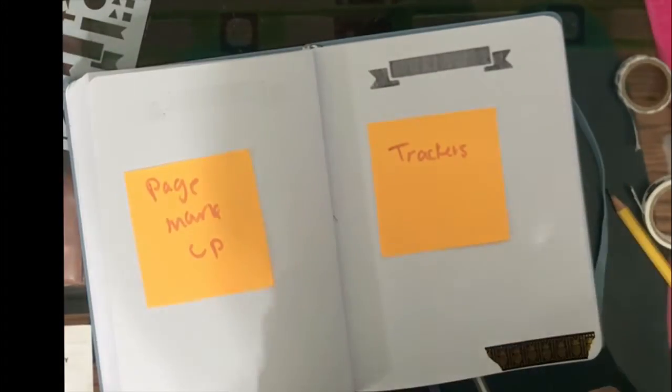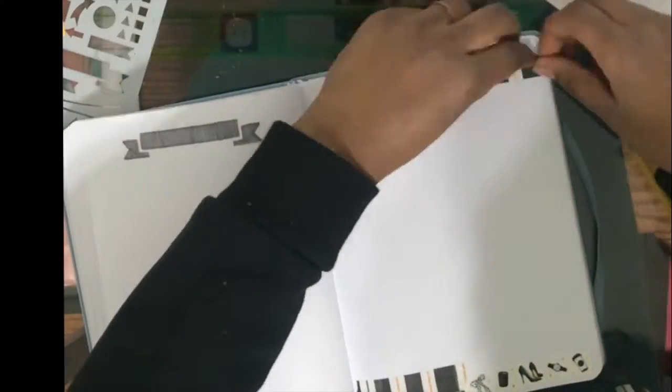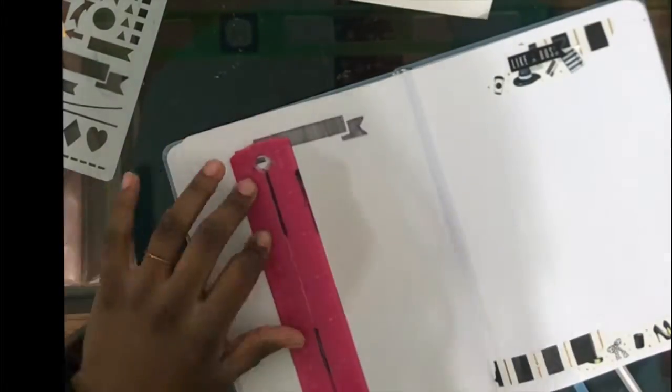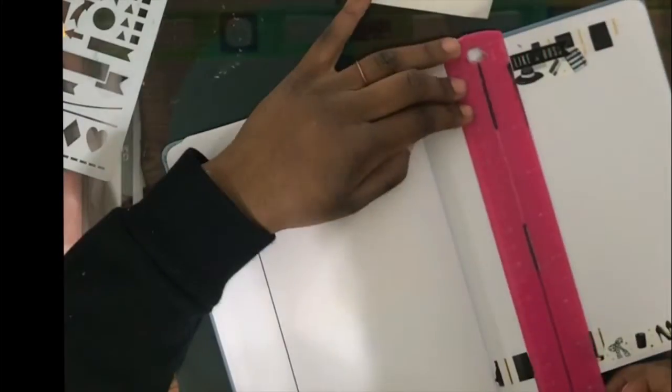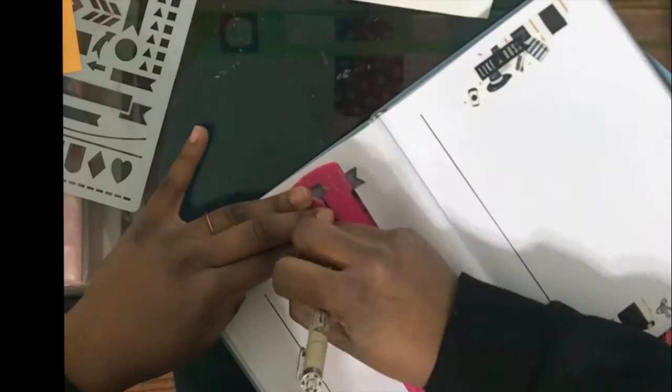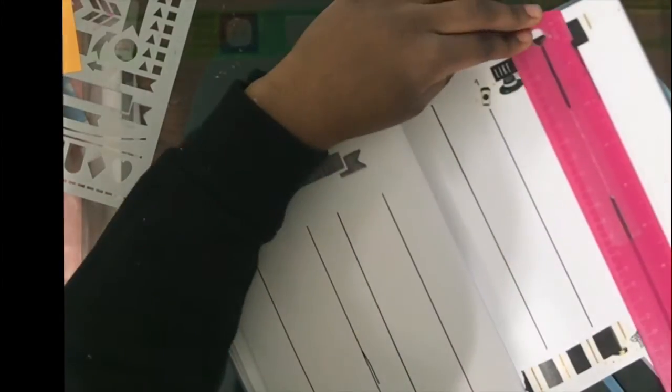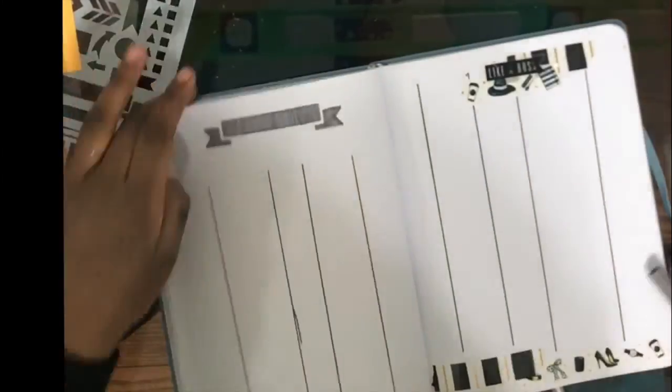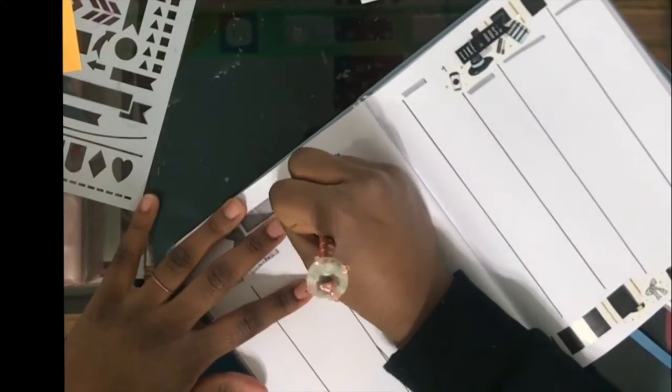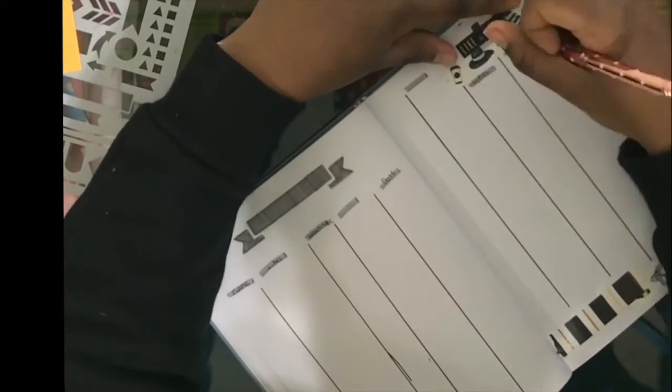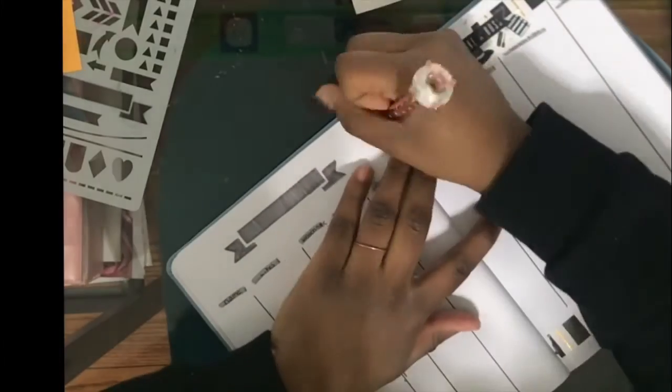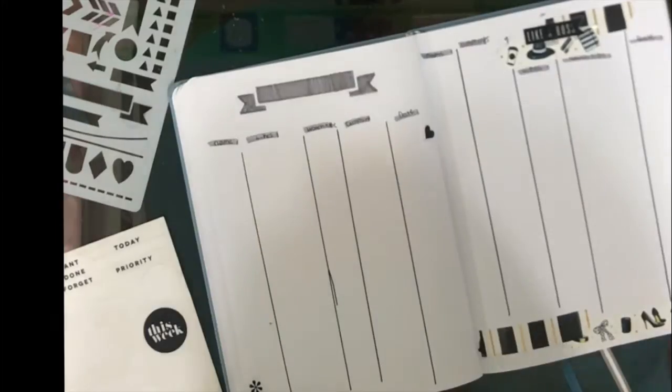Now I'm just decorating my pages with some stickers and washi tape so that it's not as plain. Now I'm just setting up my statistics page and I'm putting the categories that I want for this chart. Now I'm going to draw this chart.